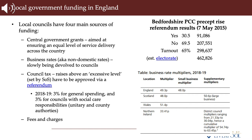A rise in rateable value at revaluation does not lead to a rise in overall revenue from business rates. The multiplier is typically adjusted to ensure that the overall yield from rates remains the same, accounting for additional physical property. If no new business property is built from one year to the next, the amount raised in business rates should remain broadly the same.